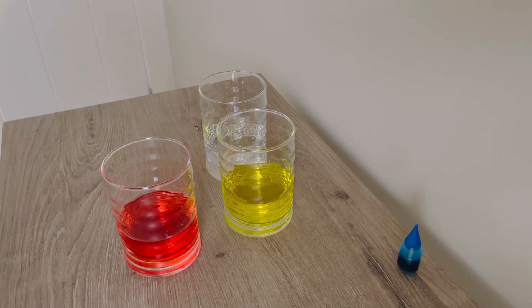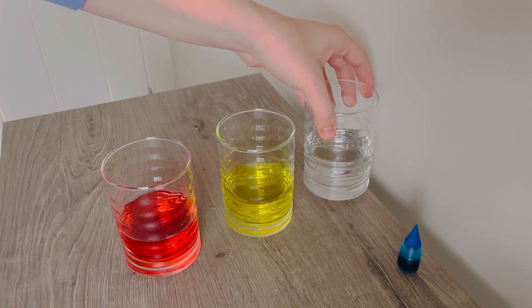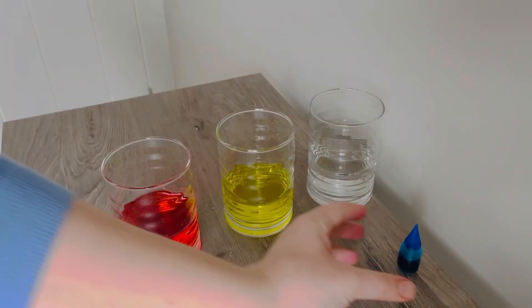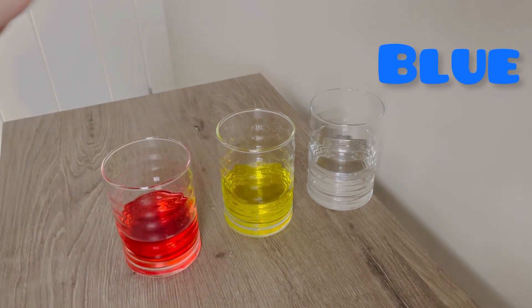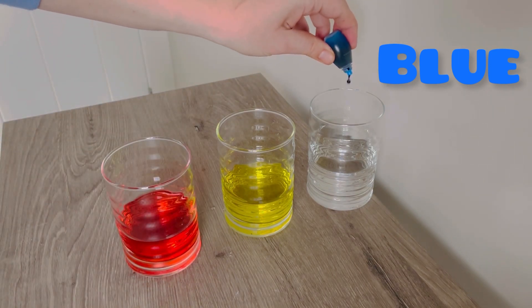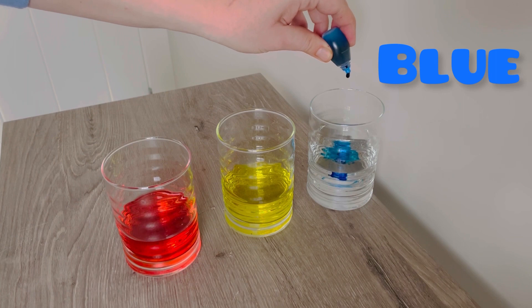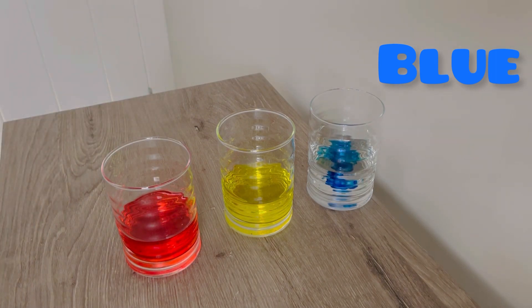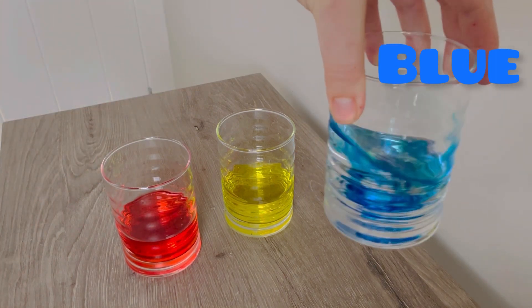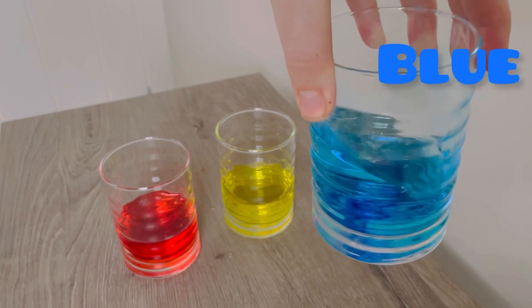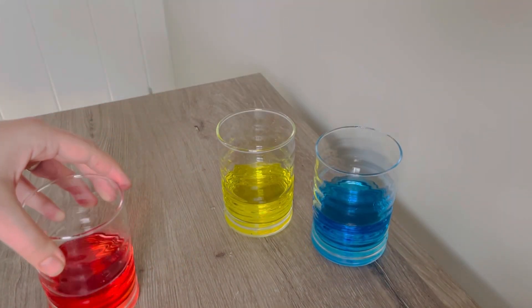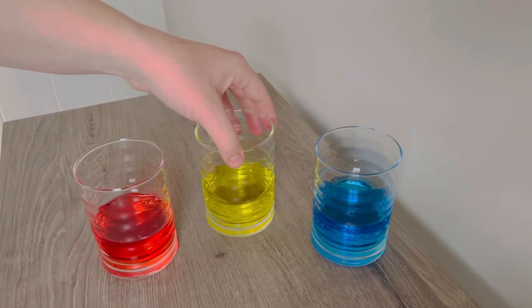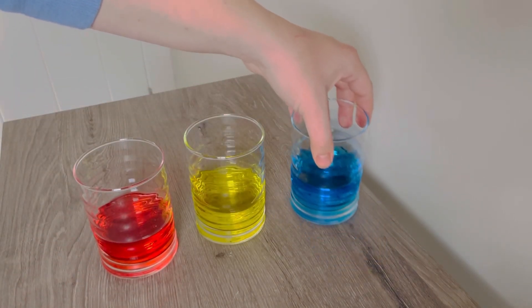But it's not quite a rainbow. Let's keep going. Glass number three. Okay, we take our blue food coloring and go one, two, three. Mix, mix, mix. Beautiful. Okay, we have red, yellow, blue.